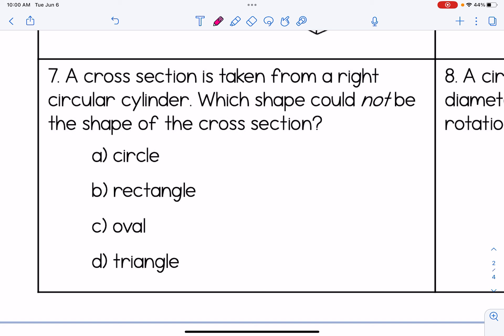Number seven, a cross section is taken from a right circular cylinder. Which shape could not be the shape of the cross section? So if we have a cylinder, we're looking for which one cannot be the case. It is definitely possible for us to get a circle. That would be if it was cut parallel to the base. So A is definitely a possibility. If it was cut perpendicular to the base, I know we don't have actual sides of a cylinder, but head-on it looks rectangular.